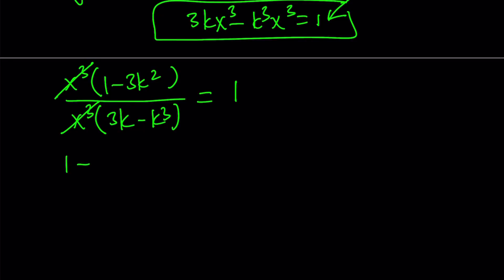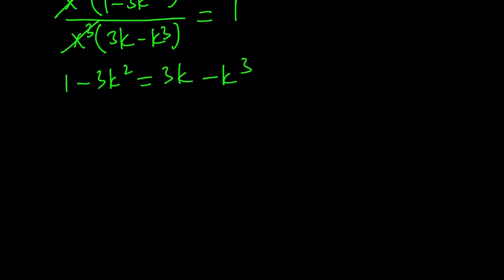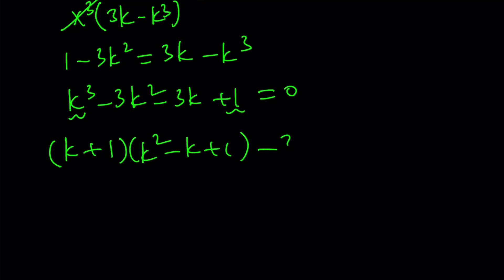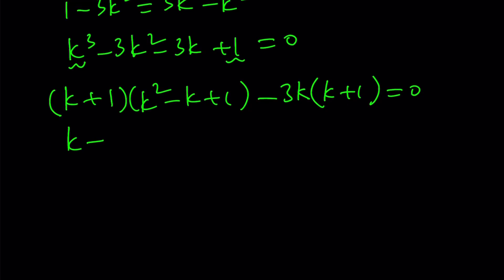Let's go ahead and distribute. We get 1 minus 3k squared equals 3k minus k cubed. Putting everything on the left-hand side gives us k cubed minus 3k squared minus 3k plus 1 equals 0. We can group these terms and factor first by using sum of two cubes, and then factoring out negative 3k. We get a common factor, and looking at the difference of the two grouped terms: k squared minus k plus 1 minus 3k gives us k squared minus 4k plus 1.